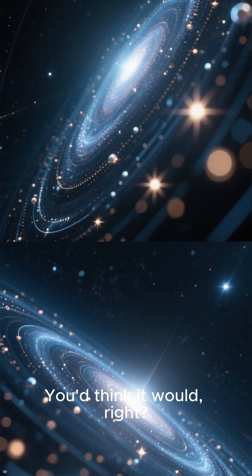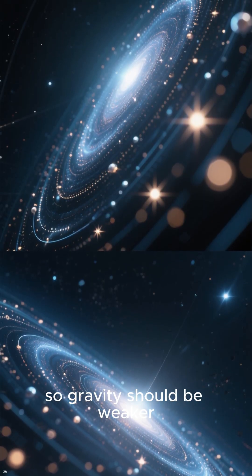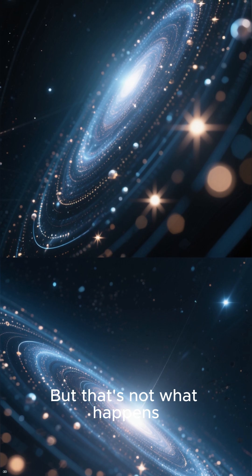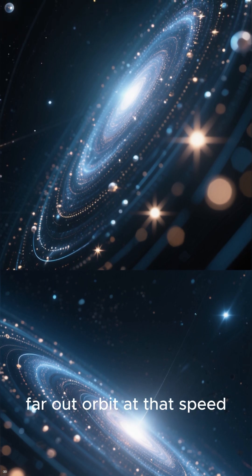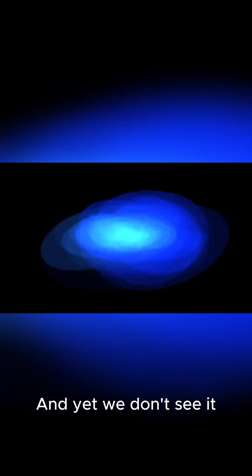You'd think it would, right? Because there's less mass out there, so gravity should be weaker. But that's not what happens. There's enough mass in this galaxy to make a star that's far out orbit at that speed. And yet we don't see it.